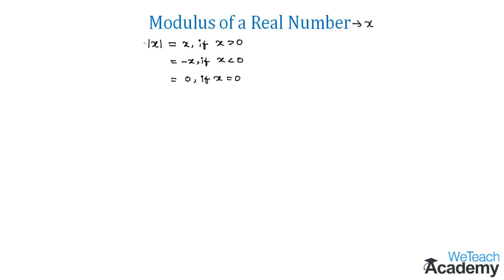For example, consider mod six. Since x equals six is greater than zero, we get the positive value, which is six. Not only positive values — if the modulus encloses a negative value, it also gives a positive result.